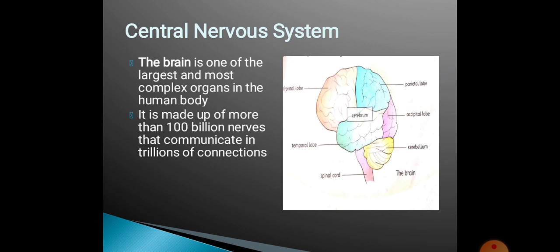The brain contains around 100 billion nerves and is divided into lobes: the occipital lobe, temporal lobe, and frontal lobe. The frontal lobe is at the front — near the eyes. The occipital lobe is also at the front, and the temporal lobe is located near the ears.